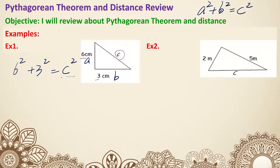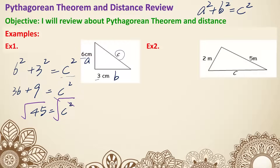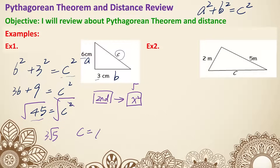Now, to get rid of the square, we take the square root — that's the reverse operation. So we need the square root of 45. On your calculator, press second, then the X squared button, which gives you the square root symbol. For this year, we'll round to two decimal places. C equals 6.71 centimeters. That is example one.